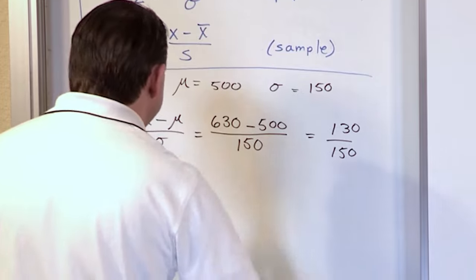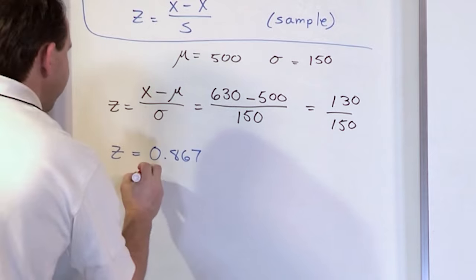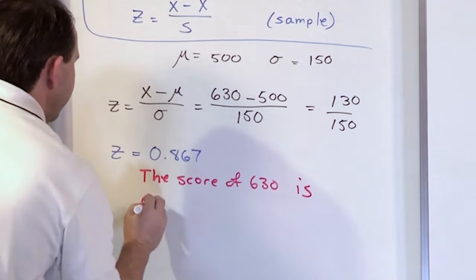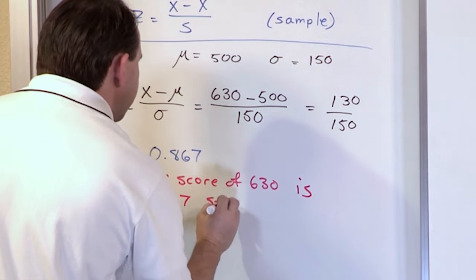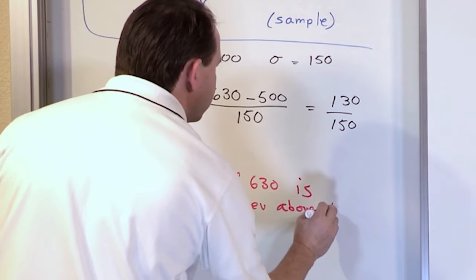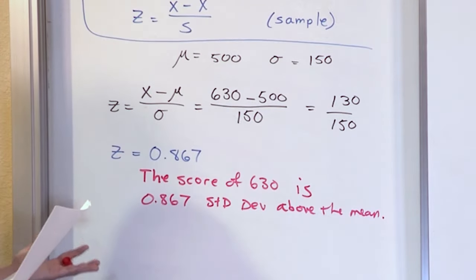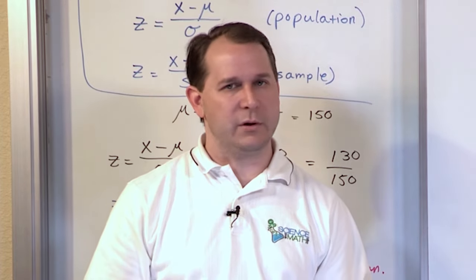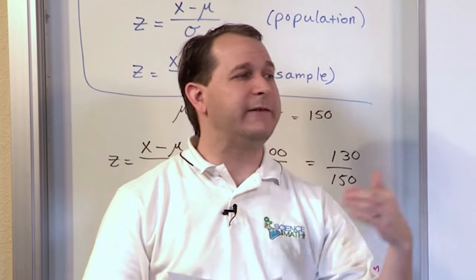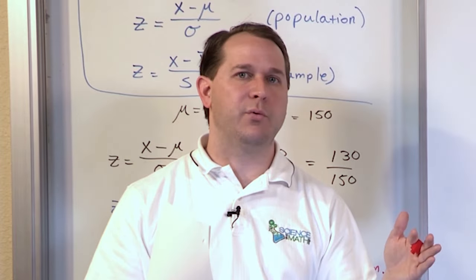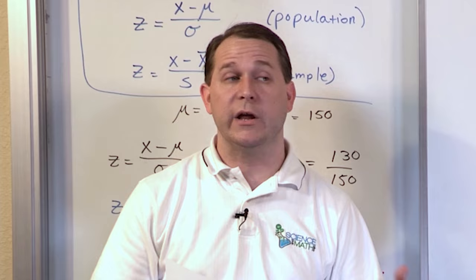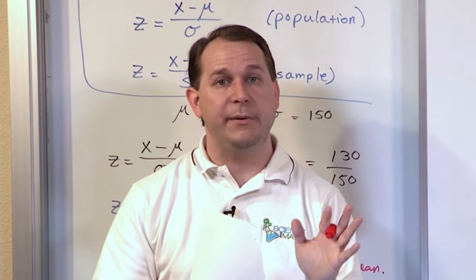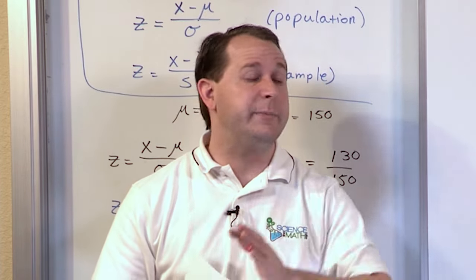What that means is that the score of 630 is 0.867 standard deviations above the mean. This person did do well, but he's not even one standard deviation above the mean — he did better than the class average, but he didn't smoke it. One standard deviation above the mean is a nice breakpoint where you're really standing out from peers. He's 0.867 standard deviations above, so he got a solid B+, but not an A+, because an A+ would put him even farther ahead.